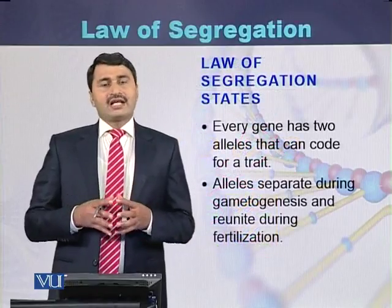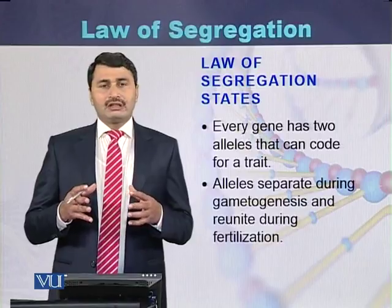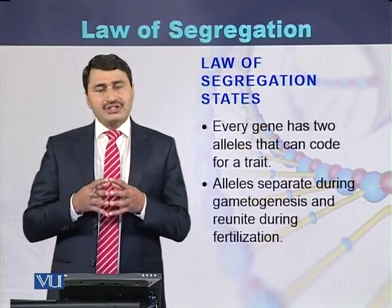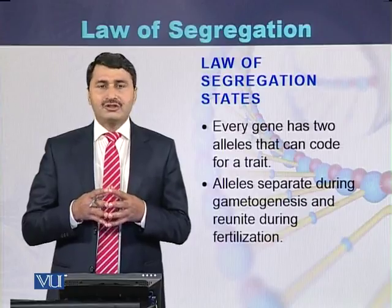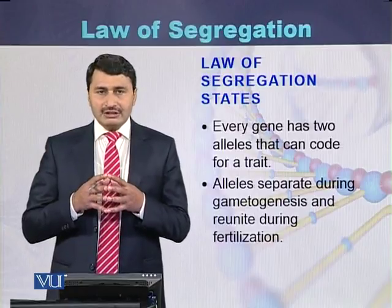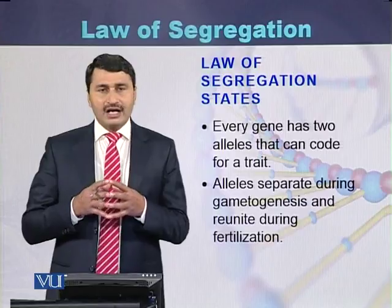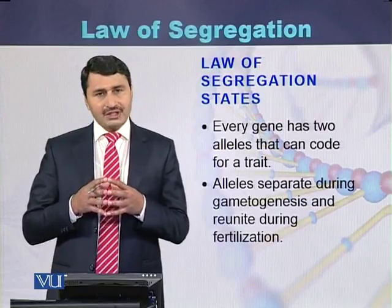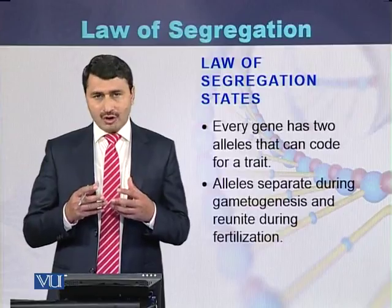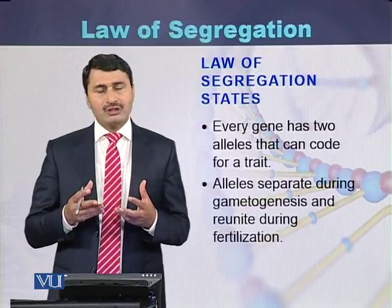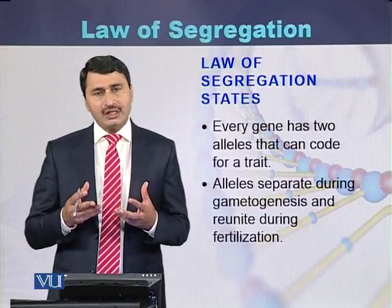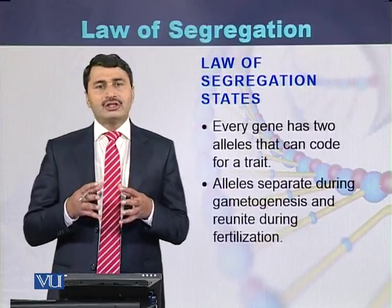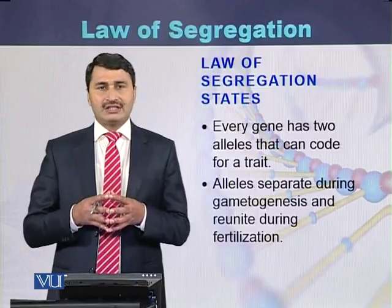In conclusion, the law of segregation states that every gene has two alleles that code for a trait. These two alleles separate from each other during the process of gametogenesis, and the alleles unite with each other during the process of fertilization.